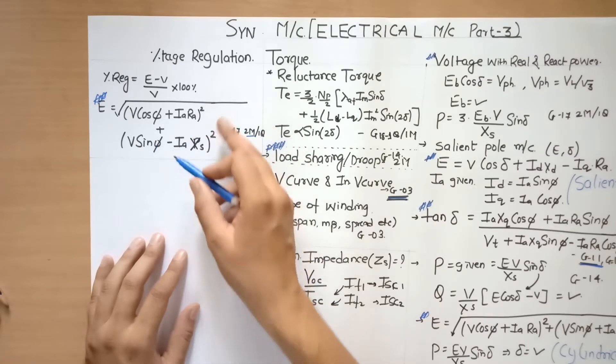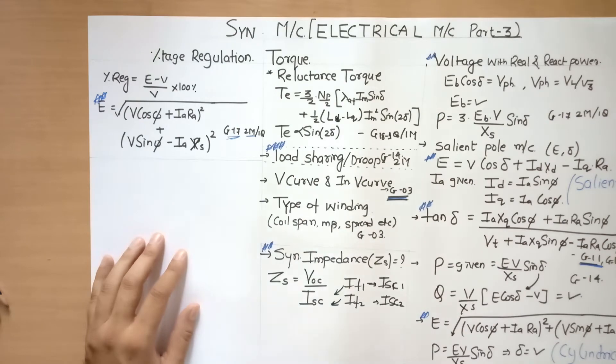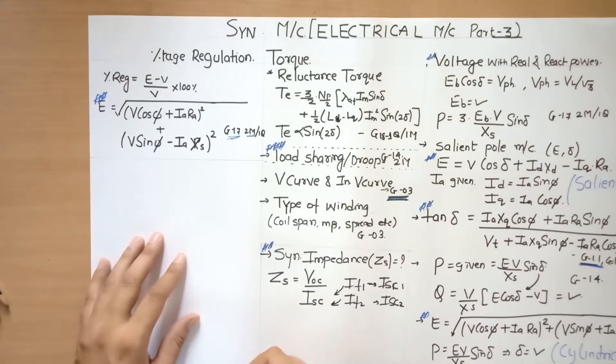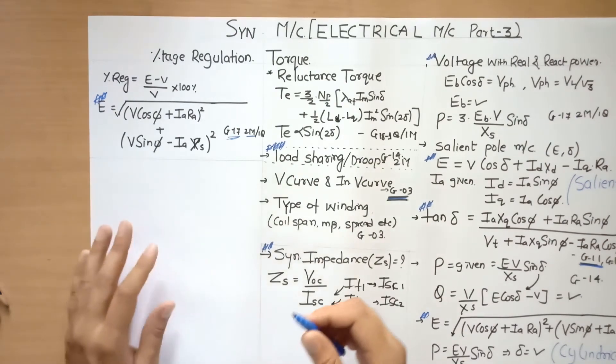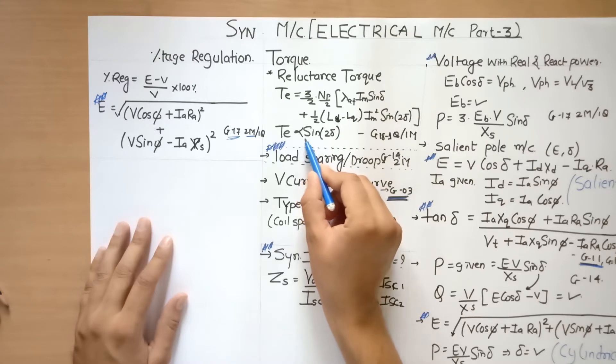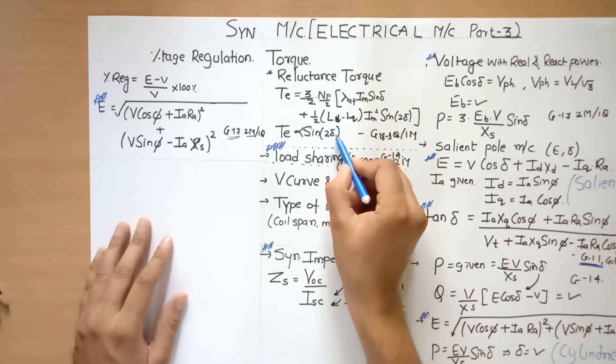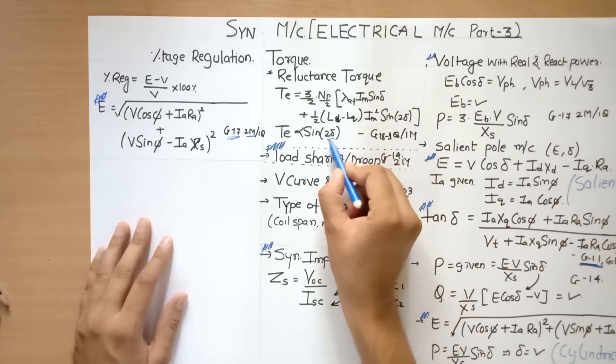Another topic was torque. So in salient pole motor, the reluctance torque is given by this equation where the torque electrical is directly proportional to sin of 2δ (load angle). So you have to remember this thing.